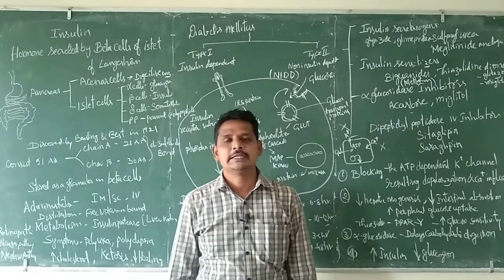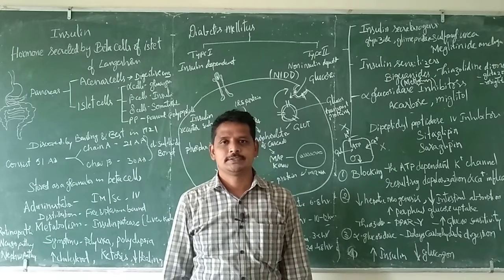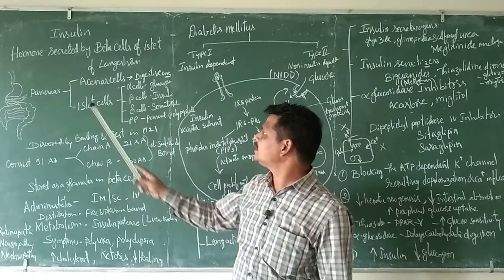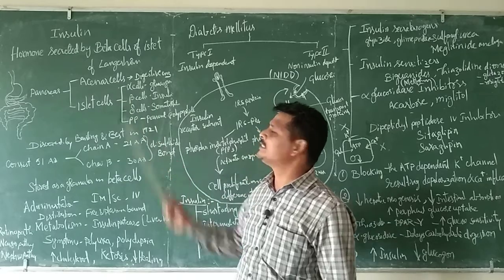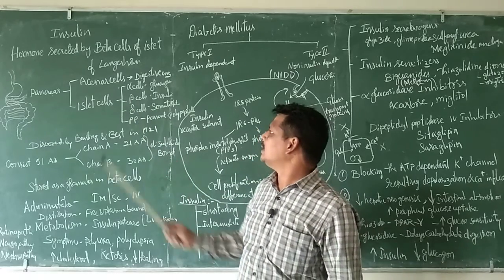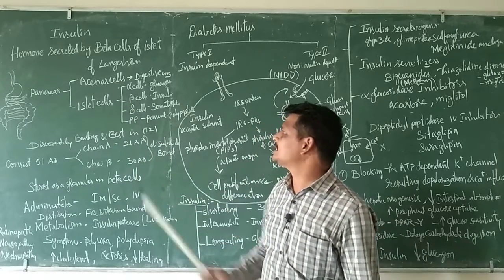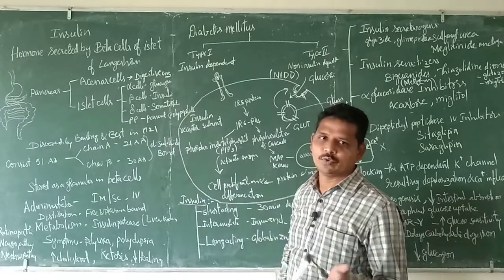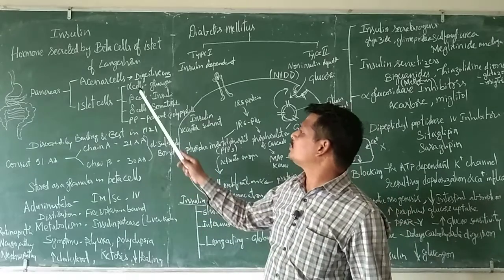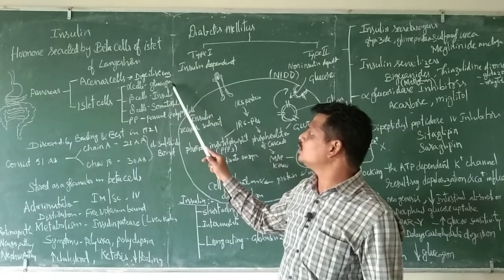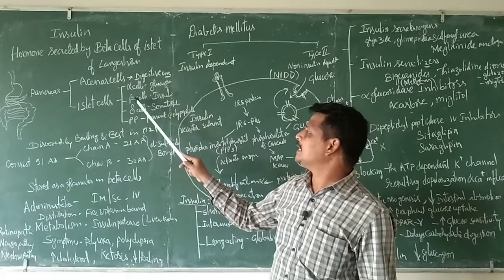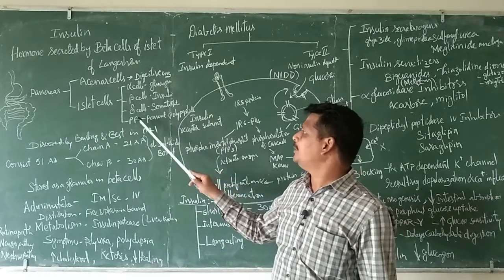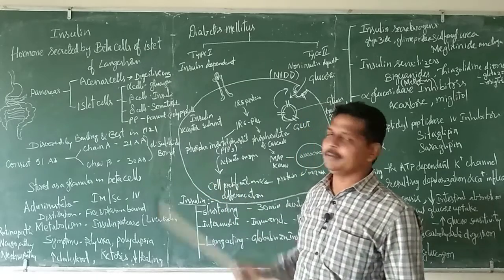Insulin is a hormone secreted from our pancreas. Pancreas normally has two types of cells: acinar cells, which secrete digestive juice, and islets consisting of alpha cells, beta cells, delta cells, and PP cells. Alpha cells are responsible for producing glucagon.